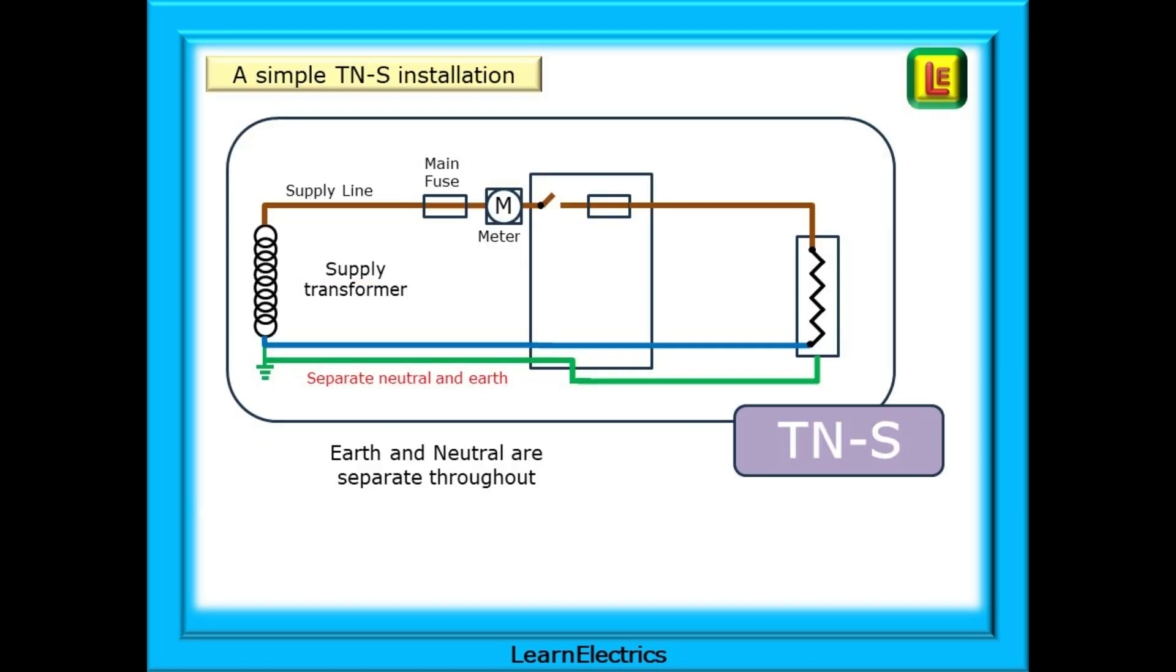We should remind ourselves of what is involved in an installation. Looking at the outside world first we will use a TNS system. TNS stands for earth and neutral separate throughout the system and you can see here that the neutral and earth conductors are joined at the supply transformer but once they leave the transformer they are separate throughout the installation.